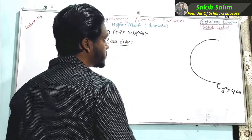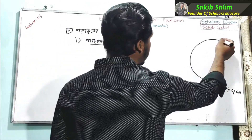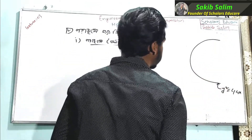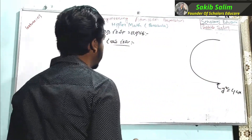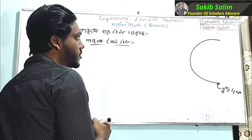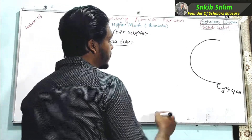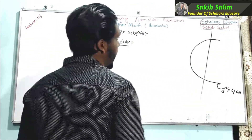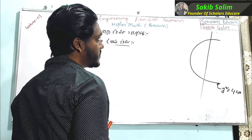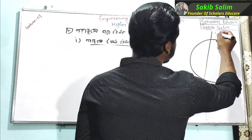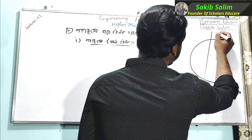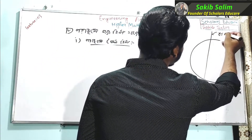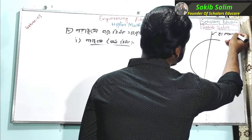This graph y squared equals 4ax — this graph is called a parabola. This graph looks like this. We have to lay it the same x-axis. We see y is equal to mx plus c.